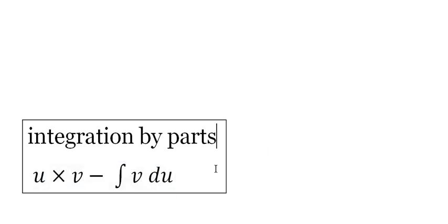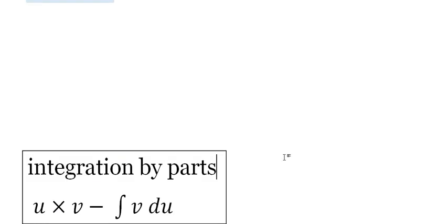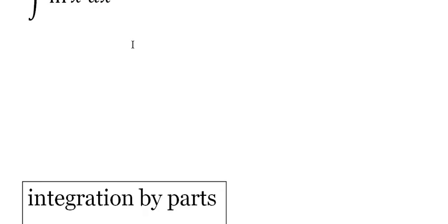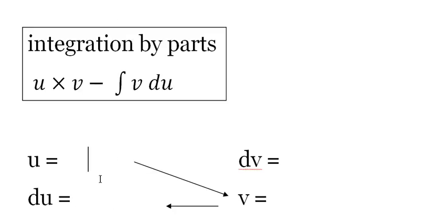Now first things first, we have to determine our u and our dv. Like I said, you want to put your natural log of x as your u. Just disregard the arrows for now. That's your u, so that means your du is 1 over x dx, right?